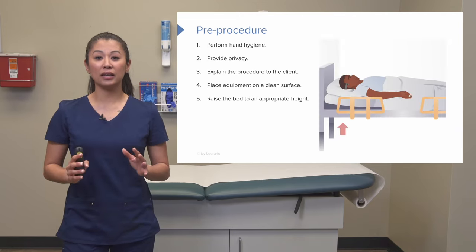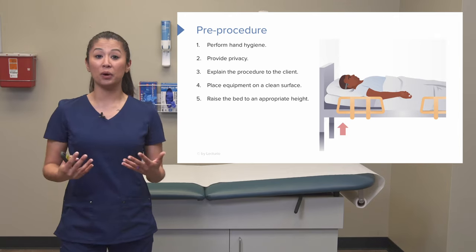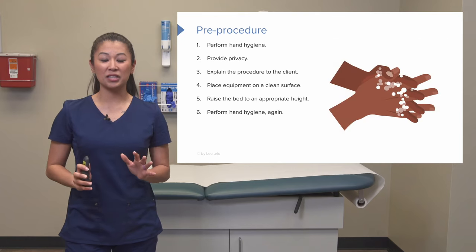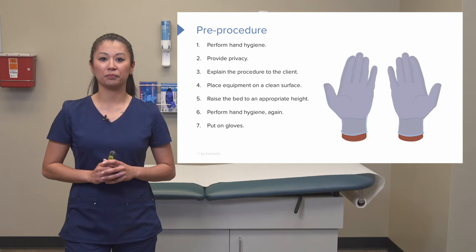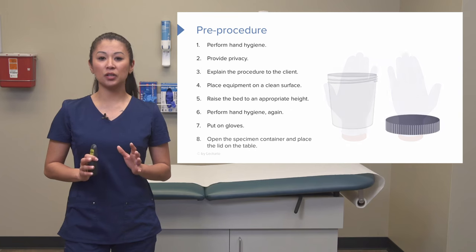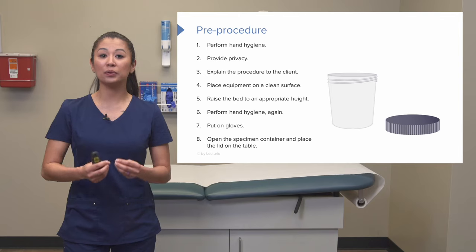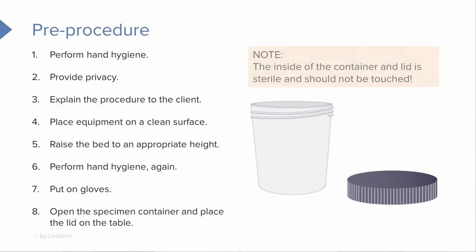Upon collection, raise the bed to an appropriate working height so you have good body mechanics. Now since we've touched that bed, perform hand hygiene again and don your gloves. Now's a good time to go ahead and open up that specimen container and place the lid on the table. Note that everything inside of that specimen container is sterile, so be conscious not to touch inside.